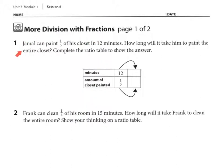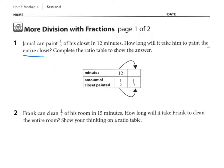Number 1 says: Jamal can paint one-fifth of his closet in 12 minutes. How long will it take him to paint the entire closet? Complete the ratio table to show the answer. When I see 'the entire closet,' that means one whole. So in the ratio table, under amount of closet painted, I want one whole closet, so I'm going to put one whole right there.